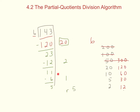Once I'm done dividing, I take my partial quotients and add them up: 20 plus 2 is 22, plus 1 is 23. I write that up at the top — 23 with 5 left over. So the answer is 23 remainder 5.